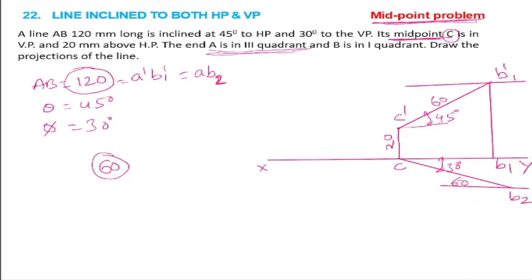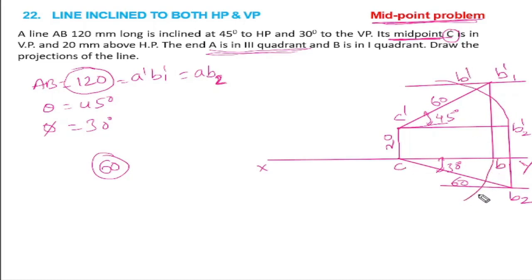We take the distance from C-B2 along the horizontal line — that point will be our B2 dash. Then we join the line between C dash and B dash, and draw a line between C and B.